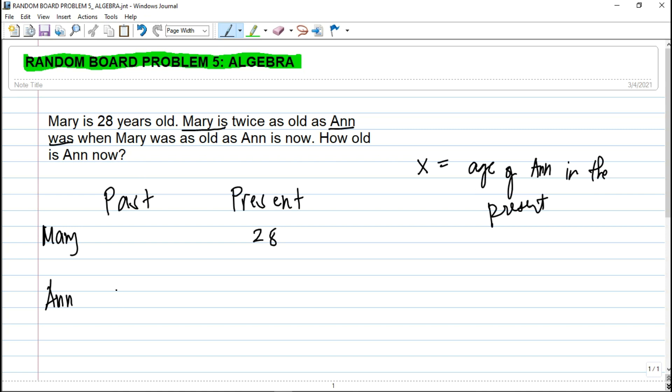So if the present age of Mary is 28, this is twice the age of Ann before. So that is Ann was. If this is 28, Ann's age in the past is divided by 2, so that is 14.